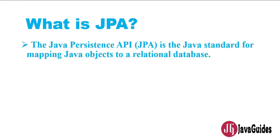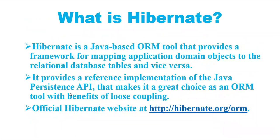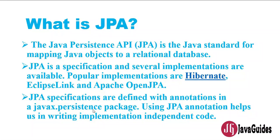JPA stands for Java Persistence API and is a Java standard for mapping Java objects to relational databases. JPA is just a specification and it has several implementations — for example, Hibernate, EclipseLink, and Apache OpenJPA. JPA specifications are defined with annotations in the javax.persistence package. Using JPA annotations helps us write implementation-independent code, so you can replace Hibernate with EclipseLink without changing your code.